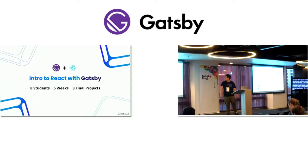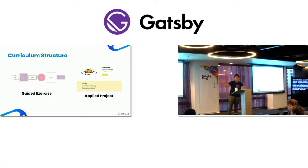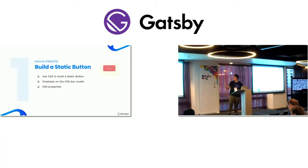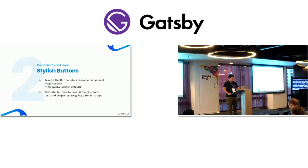A couple of months ago, I started a course called Intro to React with Gatsby. We had eight students — all my friends — five weeks, and we built eight final projects. We had a curriculum structure with a guided exercise where we'd walk them through step-by-step how to use React, and then have them apply it to make their own portfolio app. The first week was very simple: Intro to HTML CSS. Assuming these people have no coding experience, we built a static button using CSS, emphasizing the CSS box model with properties. Then in week two, this is where React and Gatsby come in — we rewrote the button into a reusable component using a Gatsby starter from GitHub, and wrote the buttons to have different colors, text, and shapes by assigning different properties.